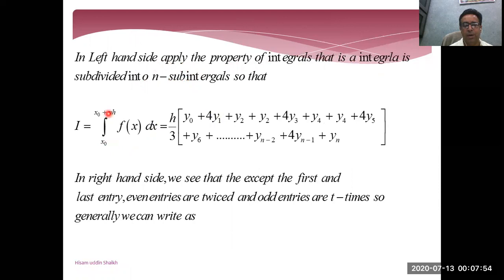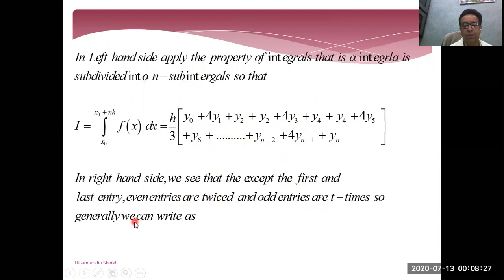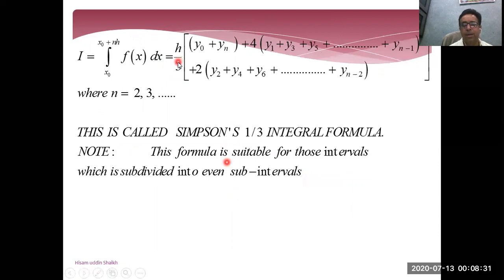The left-hand side remaining is only from x0 to x0+nh (limits A to B). On the right-hand side, except the first entry y0 and the last entry yn — which appear only once — even entries y2, y4, y6 are each repeated twice, and odd entries y1, y3, y5 appear four times. Combining all: h/3 times [first and last entry, plus four times all odd entries, plus two times all even entries]. This is the formula for Simpson's one-third rule.